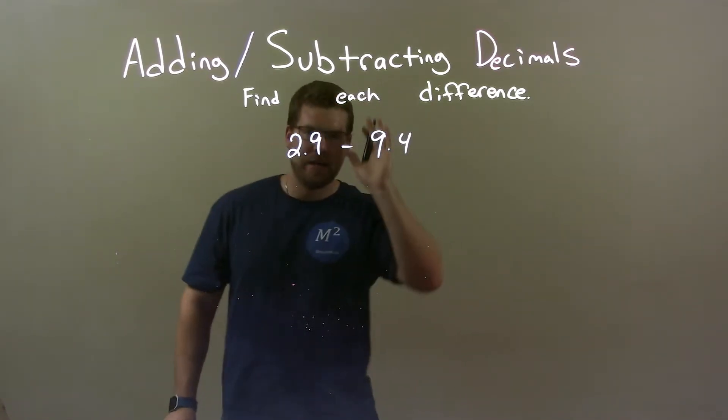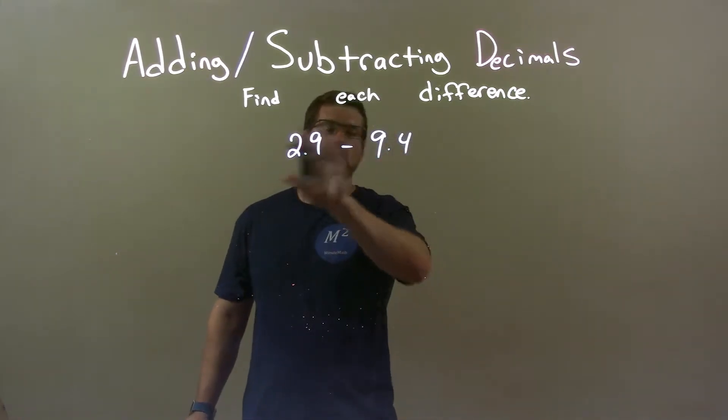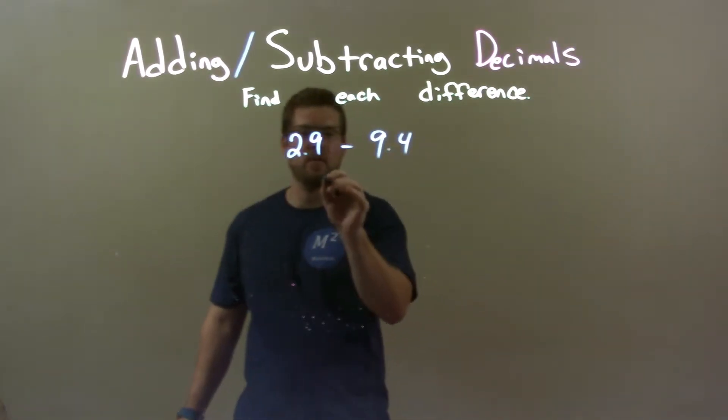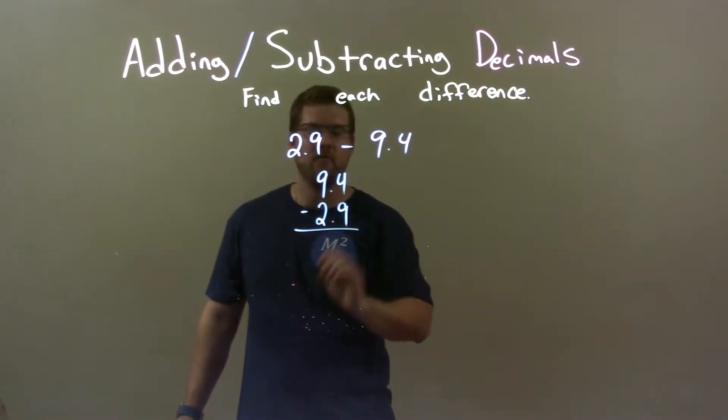With that being said, I'm going to keep that in my mind. 9.4, I need to find the difference between 9.4 and 2.9. So, 9.4 will come first when I do that and I subtract 2.9 from it.